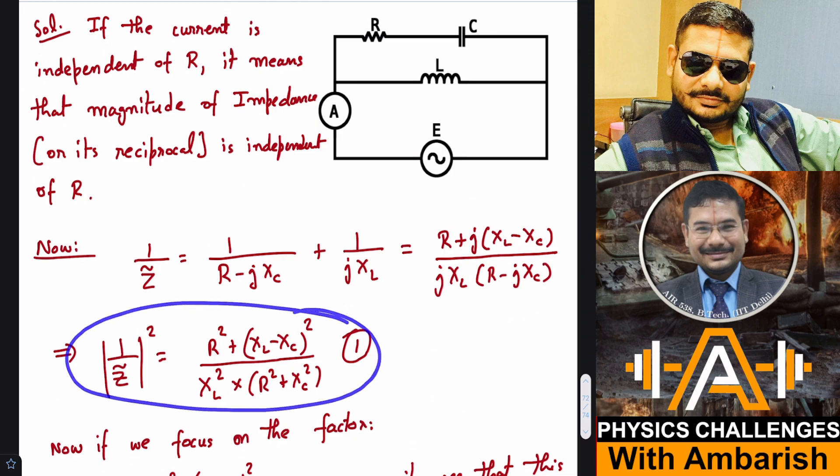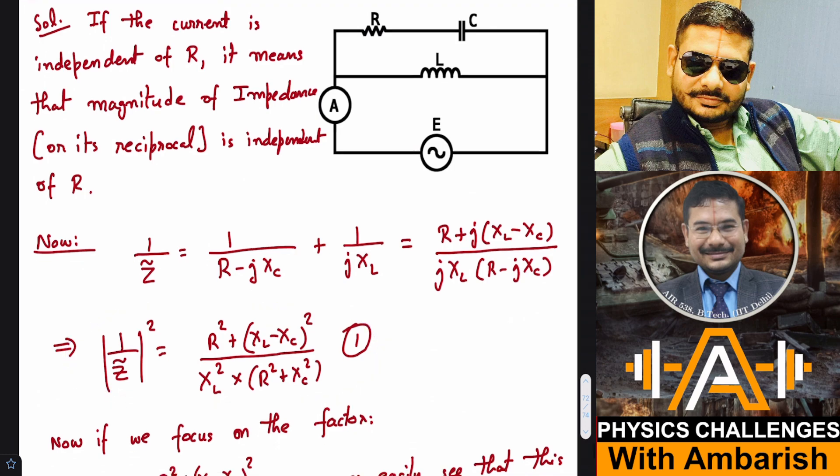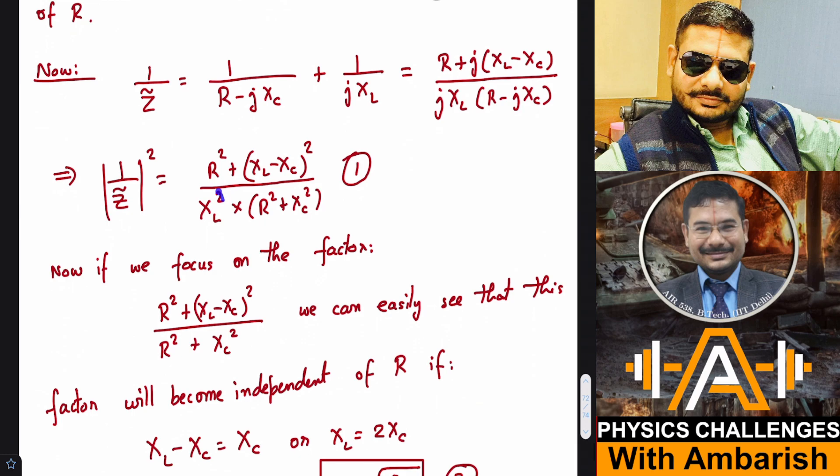Now I want this term to be independent of R. Of course, XL squared is independent of R, so that means this divided by this should be independent of R. If I focus on this term, R squared upon XL minus XC whole squared and R squared plus XC squared - this does not depend on R.